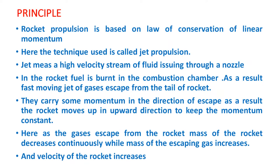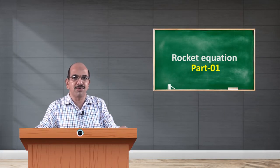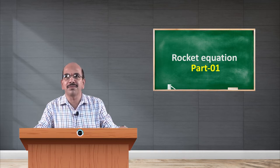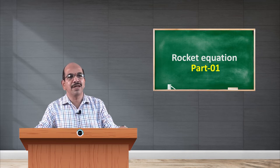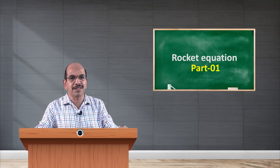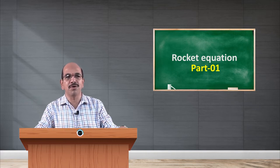Jet means a high velocity stream of fluid issuing through a nozzle. In the rocket, fuel is burnt in the combustion chamber. As a result, a fast moving jet of gases escapes from the tail of the rocket, taking some momentum in the downward direction. Before launching, the total momentum of the system was zero, so to keep the net momentum constant, the entire system moves up. The gases carry some momentum in the direction of escape, and as a result, the rocket moves upward to keep the momentum constant.